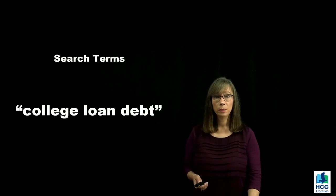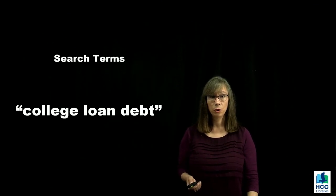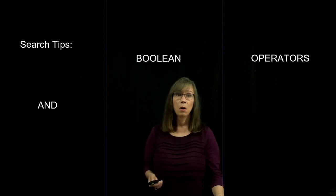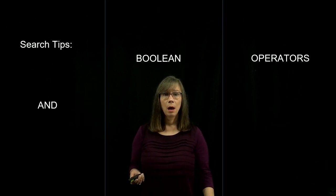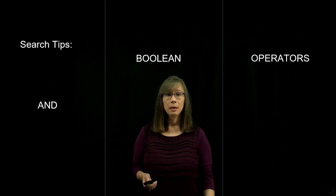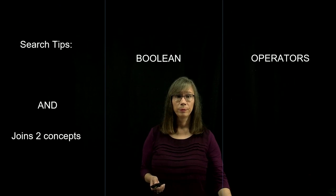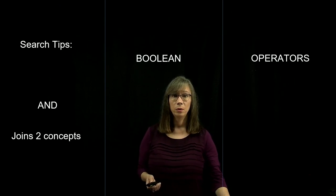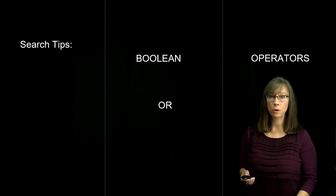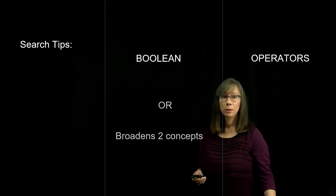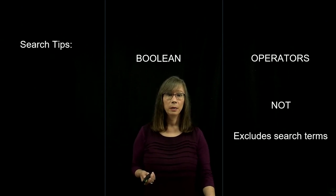So far we have discussed words to use for search terms. The next tool is called boolean operators — these are words or symbols that combine or exclude words in a search term box and join two concepts. AND connects concepts, such as student loan AND debt. OR broadens or expands two concepts. NOT excludes or eliminates search terms. These operators are typically typed in all capital letters.